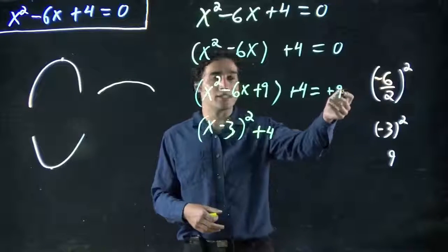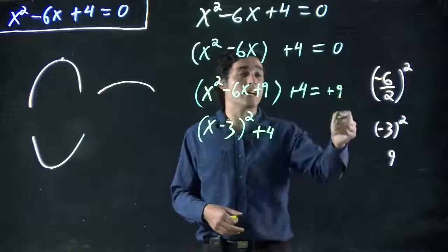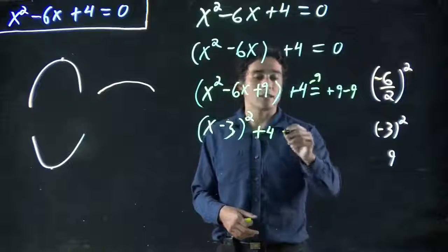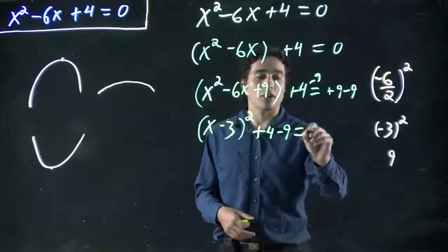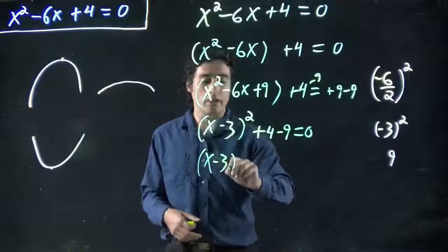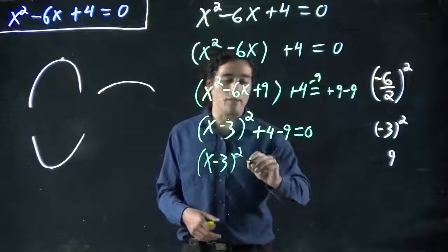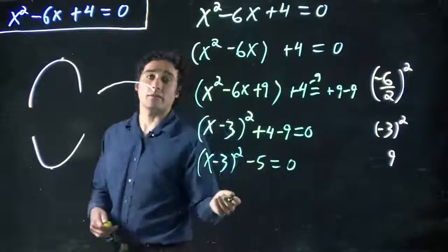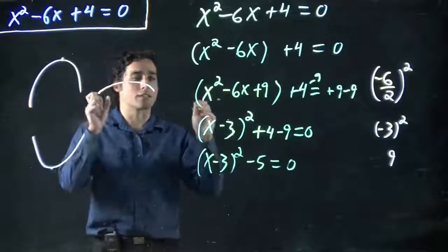But we still have plus 4 here. And actually, we don't want this plus 9 on that side. We want 0 on this side, so we're going to have to subtract 9 from both sides while we were doing this. So, minus 9, all equals 0. This is still x minus 3 squared. And now, minus 5, all equals 0. This was completing the square. This was putting into vertex form.